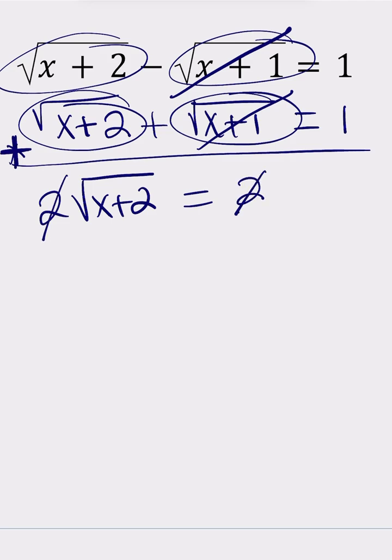Divide both sides by 2, you get 1. Square both sides, you get x+2 = 1. 1 squared equals 1, remember that. And from here you get x = -1.